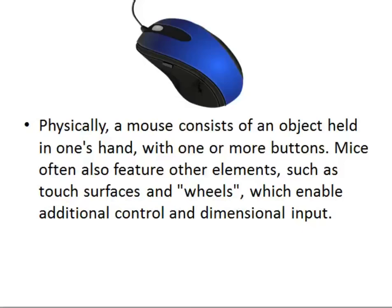Physically, a mouse consists of an object held in one's hand with one or more buttons. Most mice have two or maybe three buttons. Mice often also feature other elements such as touch surfaces and wheels, which enable additional control and dimensional input — for example, we use the wheel for scrolling.